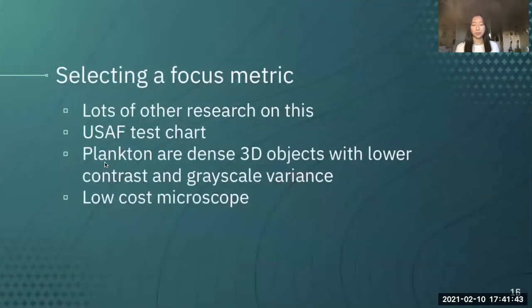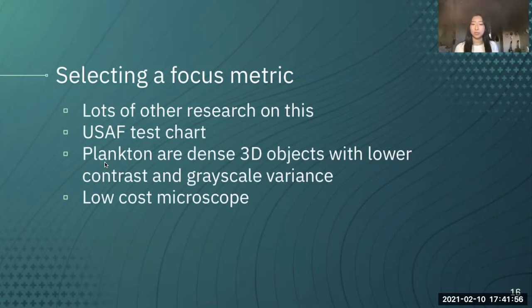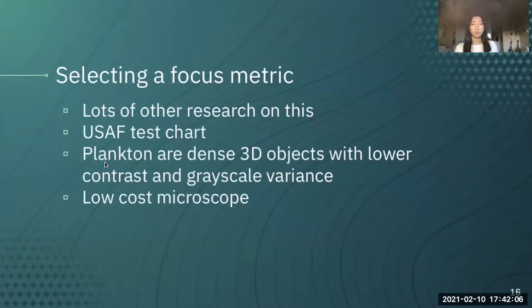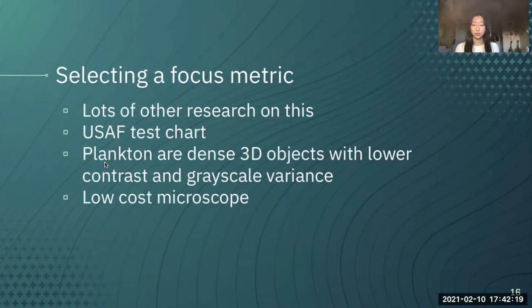But how do we select the focus metric? There's a lot of other research on this, and most of them use things like the USAF test chart, which is basically a crosshair of two lines, and they try to see if they can focus on those lines. But plankton are dense 3D objects with lower contrast than that USAF test chart, and they have lower grayscale variance, which makes them pretty difficult to capture and focus. Additionally, we're using this low cost microscope, which results in lower quality images. So this is a challenge, but one that we wanted to see if we could overcome.